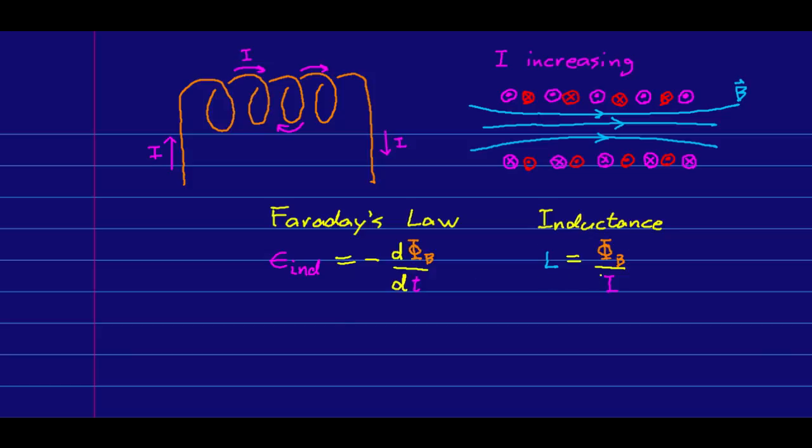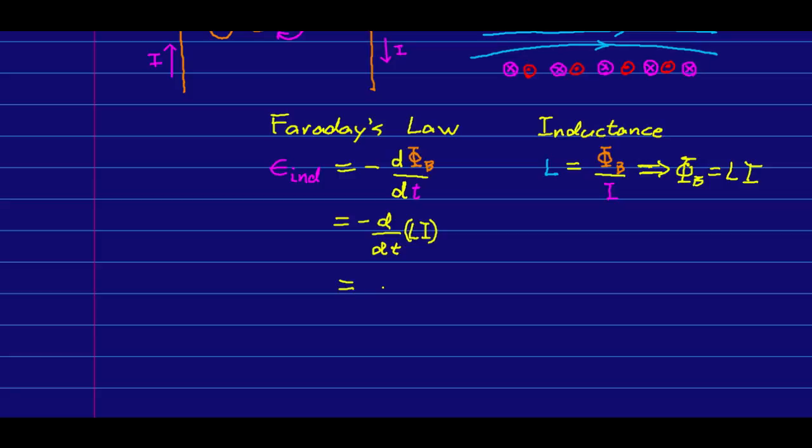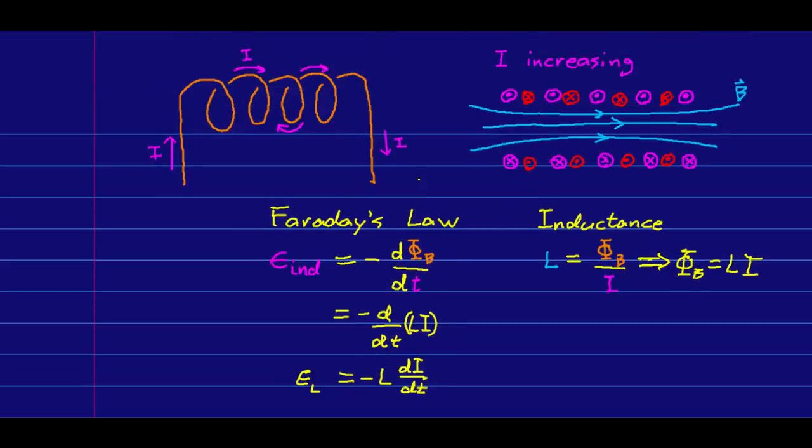And we can just use Faraday's law to figure out what that EMF is. Note that the inductance is defined as flux per unit current, or in other words, we can say that the flux is just the inductance times the current, which I can put into Faraday's law. But the inductance is just a constant. It's a property of the inductor and doesn't change. So that can just come out in front of the derivative. And this is the relation for the EMF of an inductor. And note what the negative sign is just saying. It is saying that, by Faraday's law, this EMF always tends to oppose changes in current through the inductor.